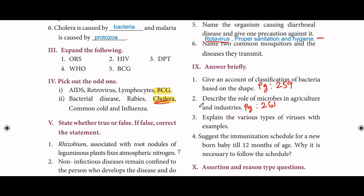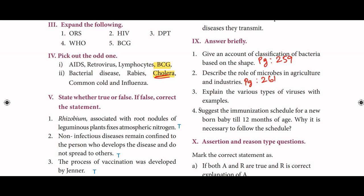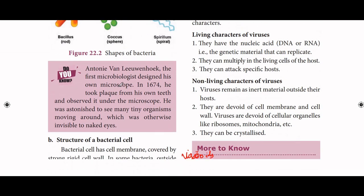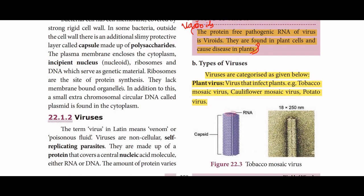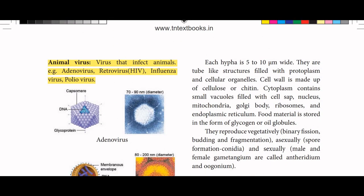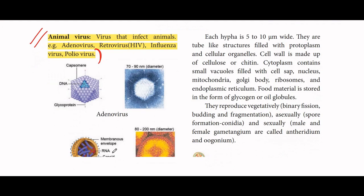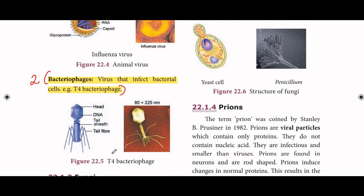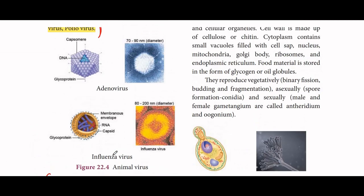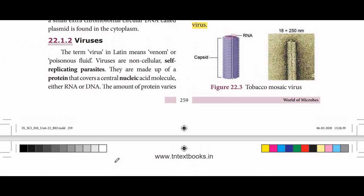Third question: explain the various types of viruses with examples — from page number 259. Types of viruses are categorized as: plant viruses, animal viruses, and bacteriophages.